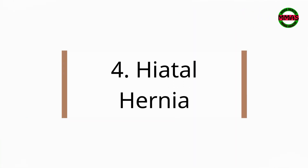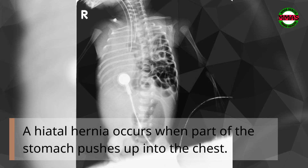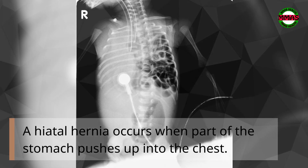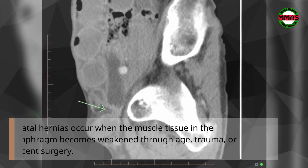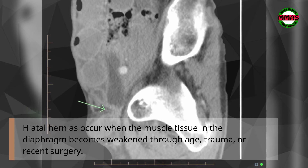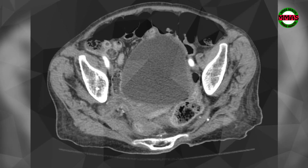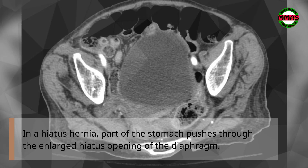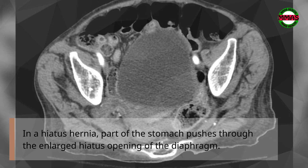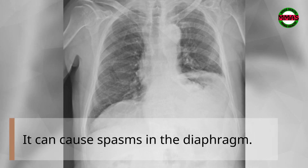Hiatal hernia: A hiatal hernia occurs when part of the stomach pushes up into the chest. Hiatal hernias occur when the muscle tissue in the diaphragm becomes weakened through age, trauma, or recent surgery. Part of the stomach pushes through the enlarged hiatus opening of the diaphragm, which can cause spasms.